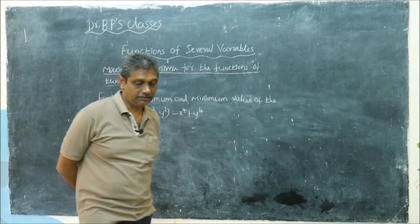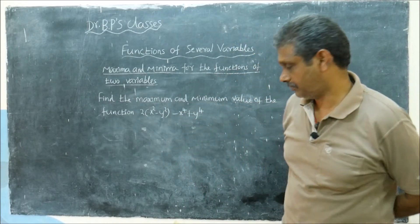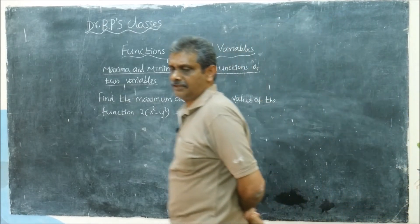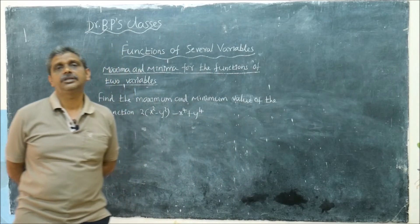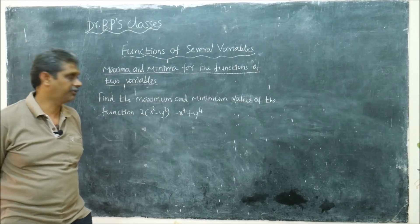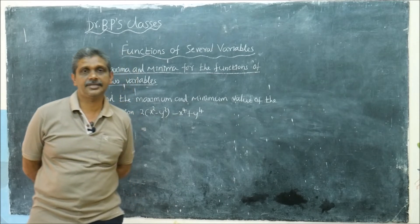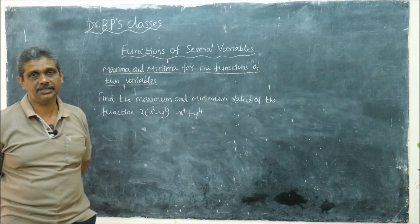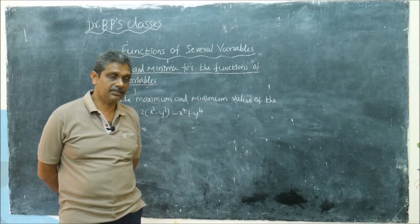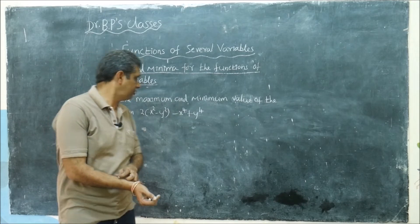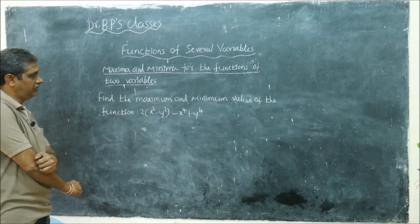Hi friends, this is your Dr. BP. We already discussed finding maxima and minima of a function of two variables. First you find fx equal to 0, fy equal to 0, then rt minus s squared you find at the stationary points. If it is greater than 0, you check fxx: less than 0 means maxima, greater than 0 means minima. Now let's see how to attack the problem. I have one problem in hand and I will explain it. Later I will give a few more problems for you to try.